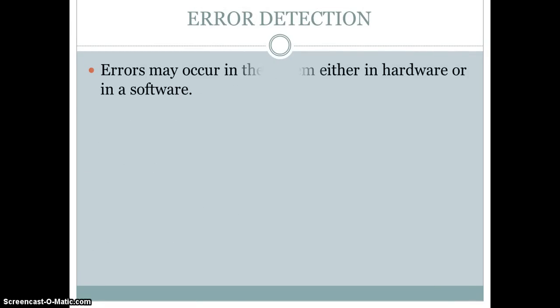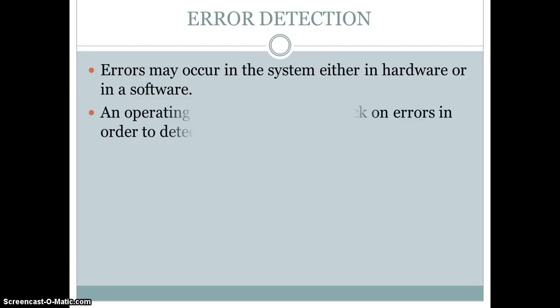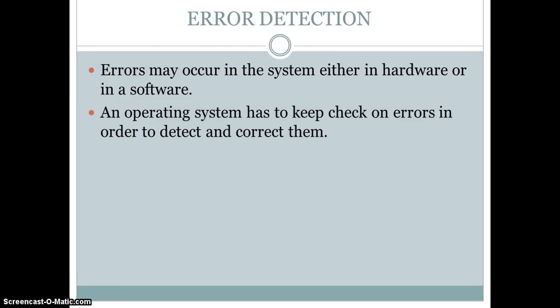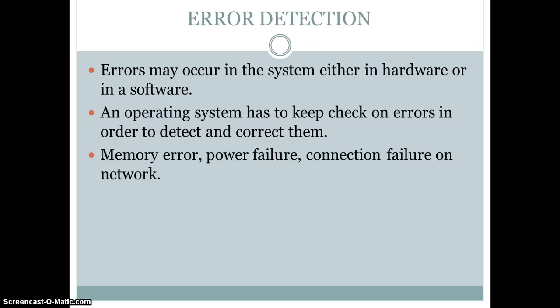We're also going to talk about error detection. Errors may occur in the system in either hardware or software. The operating system must be able to detect system errors and keep track of them in order to detect and correct them. The operating system should have the ability to detect and correct errors, including memory errors, connection failures, and network issues. That's all for today — we'll talk about more next time. Bye!